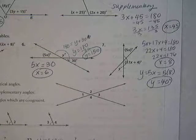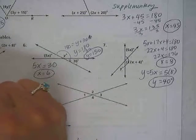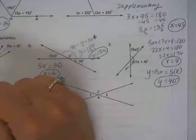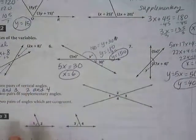Okay, let's just check number 8, 9, and 10. Two pairs of vertical angles. So what did you get? 1 and 3, 2 and 4.